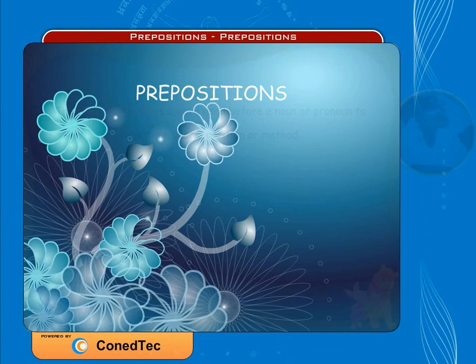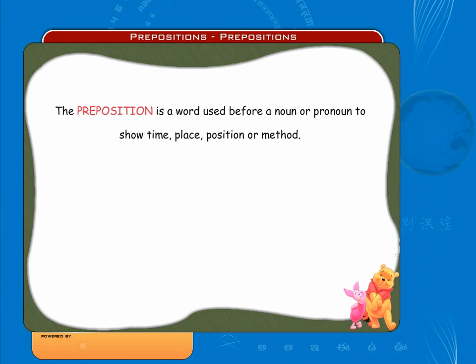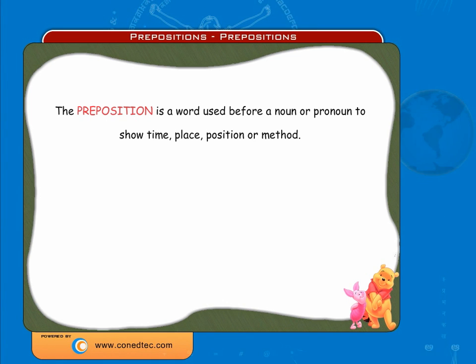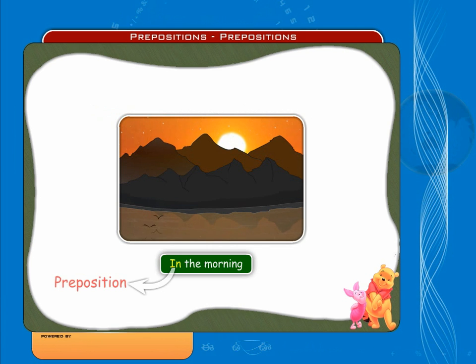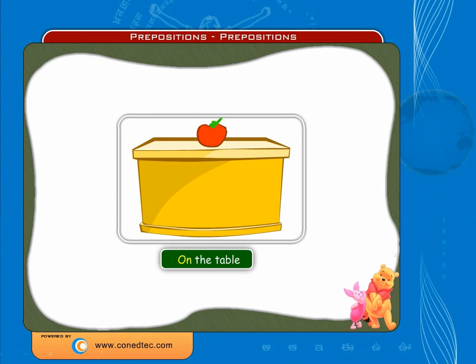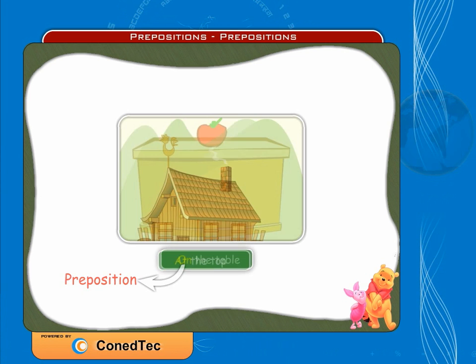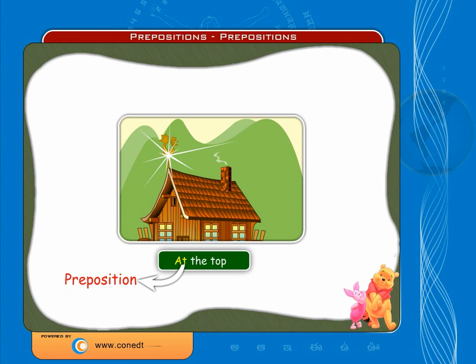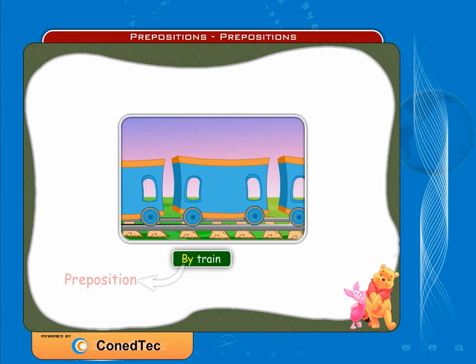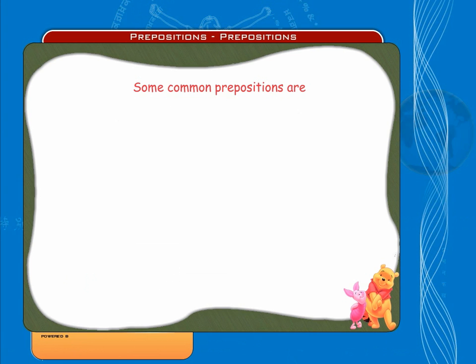Prepositions: The preposition is a word used before a noun or pronoun to show time, place, position, or method. Example: in the morning, the word 'in' specifies the preposition. On the table, the word 'on' represents the preposition. At the top, the word 'at' represents the preposition. By train, here the word 'by' specifies preposition.